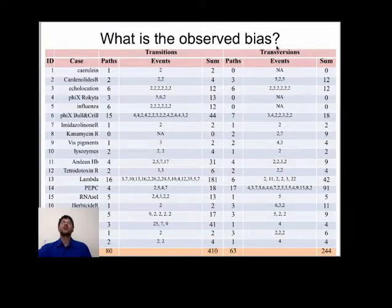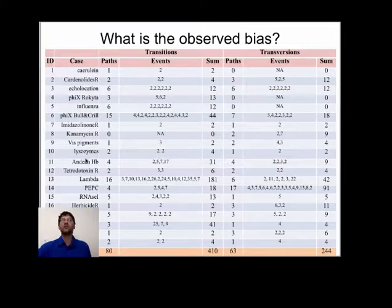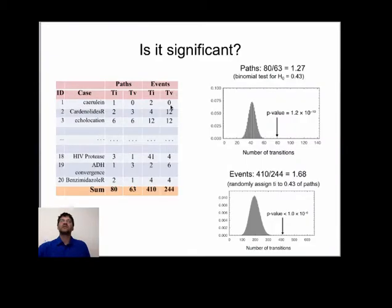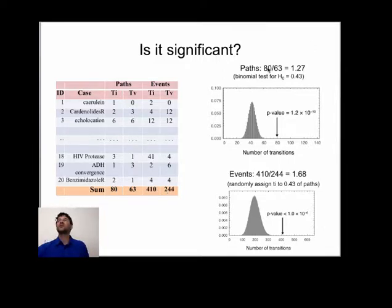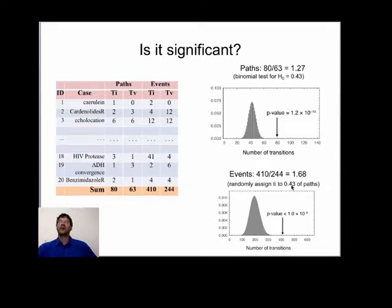Here is a summary of the data with the cases separated by transitions and transversions, showing the number of paths observed and number of events observed. For instance, in the case of high-altitude hemoglobins, there are four transition pathways occurring 2, 5, 7, and 17 times, and four transversion pathways occurring 2, 2, 3, and 2 times in parallel. Looking at the totals: by pathways, transitions are 80 to 63 transversions, giving a ratio greater than 1; by events, it's 410 to 244. The ratio of pathways — 80 to 63, or 1.3 — is three times higher than the null hypothesis expectation of 0.43, and that is highly significant. By events, the ratio is even higher, four-fold above the null, and also highly significant.